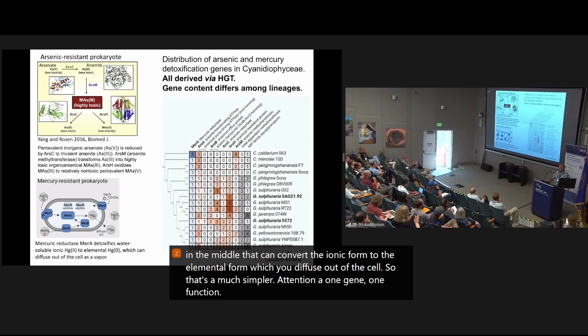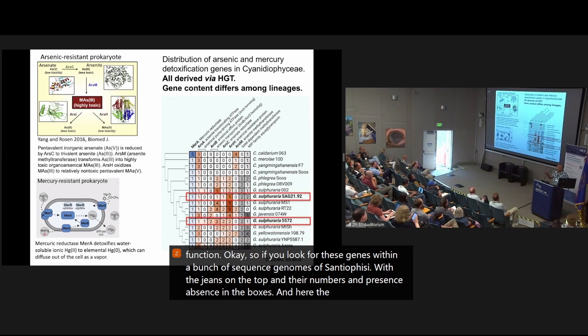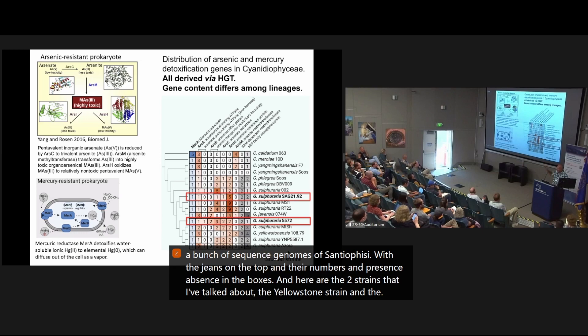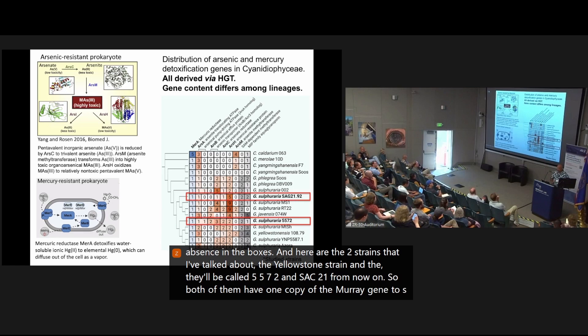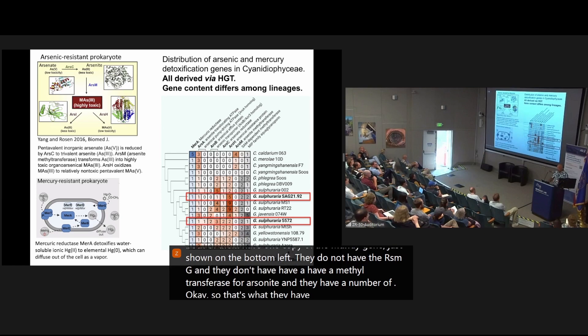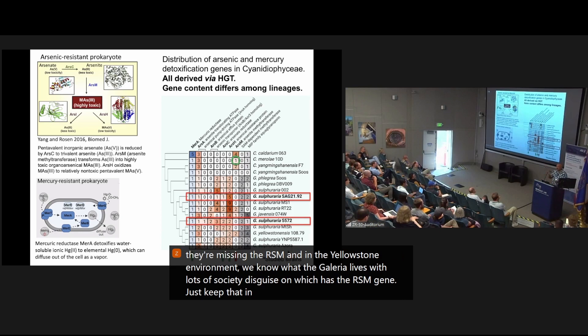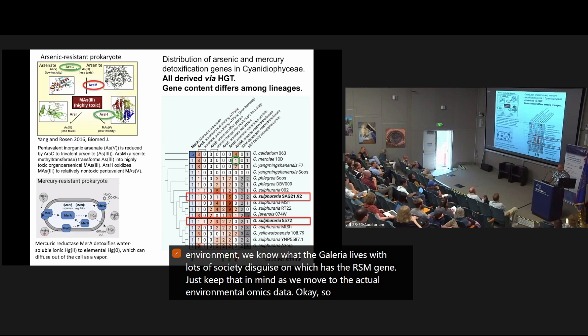Okay, so if you look for these genes within a bunch of sequenced genomes of cyanidioficea with the genes on the top and their numbers and presence-absence in the boxes, and here are the two strains that I've talked about, the Yellowstone strain and the, they'll be called 5572 and SAG21 from now on. So both of them have one copy of the MerA gene, which is shown on the bottom left. They do not have the ArsM gene. They don't have a methyl transferase for arsenite, and they have a number of ArsH genes. Okay, so that's what they have in the cell. What's interesting, and I'll point out here, that they're missing the ArsM, and in the Yellowstone environment, we know that Galdieria lives with lots of Cyanidioschizon, which has the ArsM gene. Just keep that in mind as we move to the actual environmental omics data.